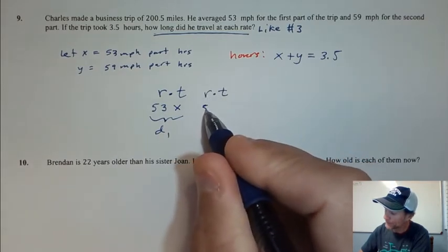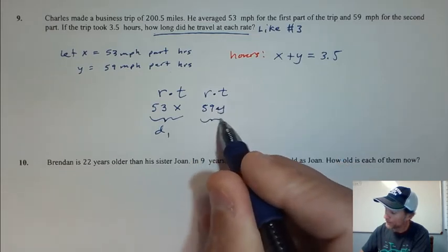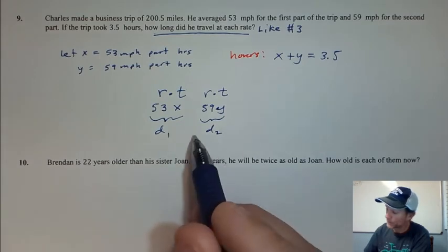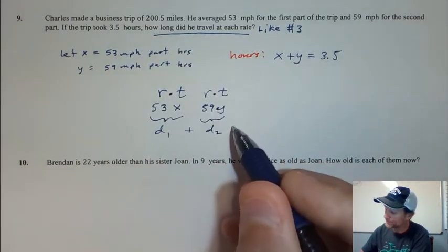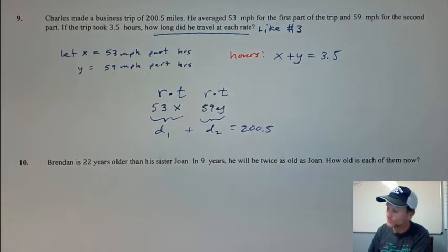I'll call that distance of the first part. Then I have rate times time, which is 59 times y, which I'll call the second part of the trip. Well, what do I know about these two distances here? Those two distances equal 200.5 miles.